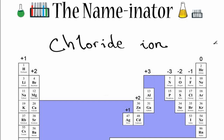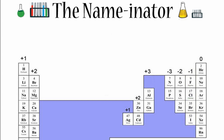If I wanted to write the chemical formula for the chloride ion, I would look up chlorine on the periodic table, and it's Cl. I can see that all of the elements in group seven or 17 have a negative one charge, so I'm just going to write a negative here, and that is the chemical formula for the chloride ion.